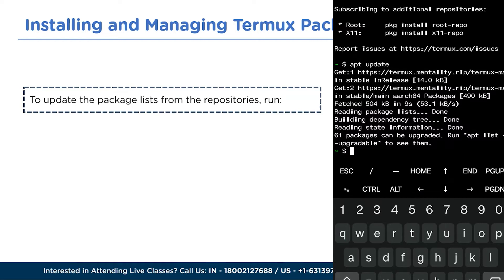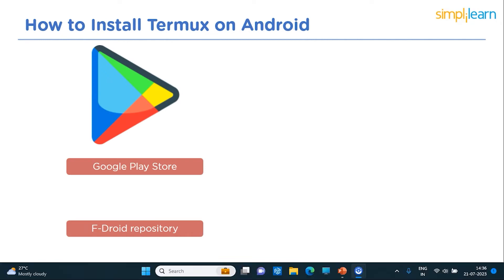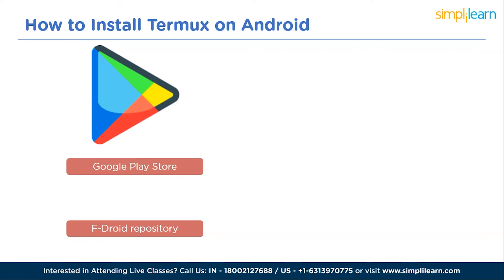When you first download the app, it will ask for storage access permissions — allow them. If it doesn't ask, by default Termux operates in its sandbox and does not have direct access to Android device storage. To grant storage access manually: open Settings, go to Apps or Apps & Notifications, find Termux, tap Permissions, look for Storage or Read and Write Files, and toggle it on.